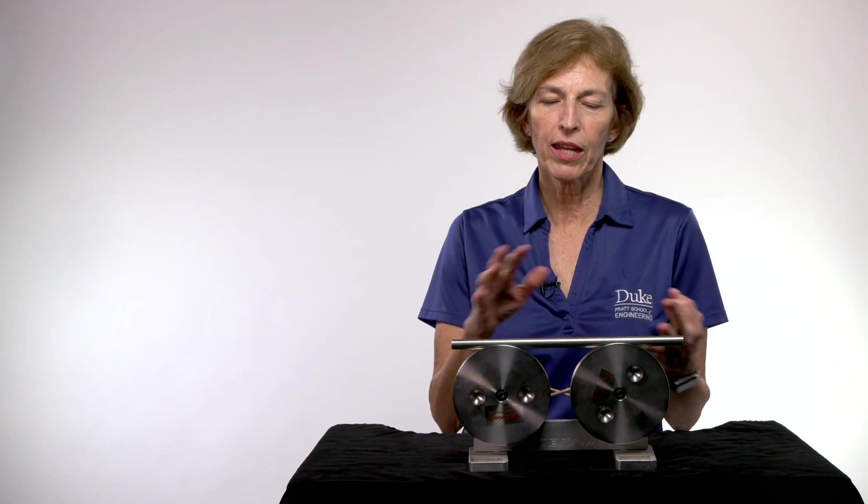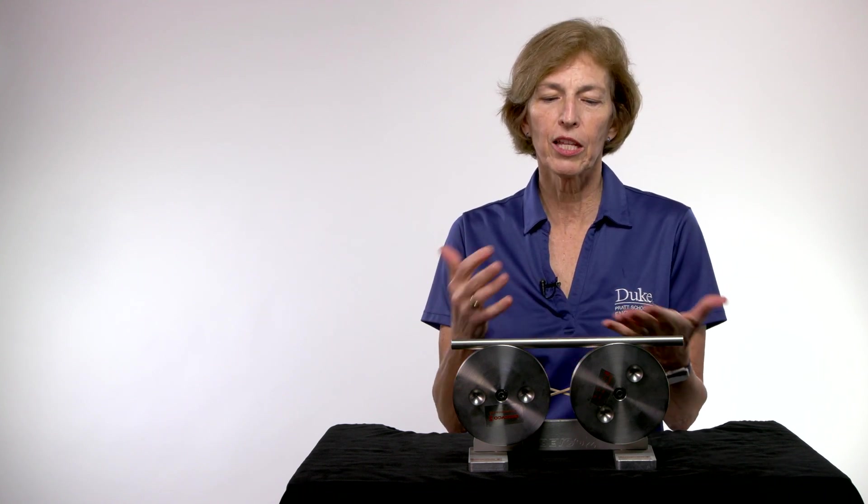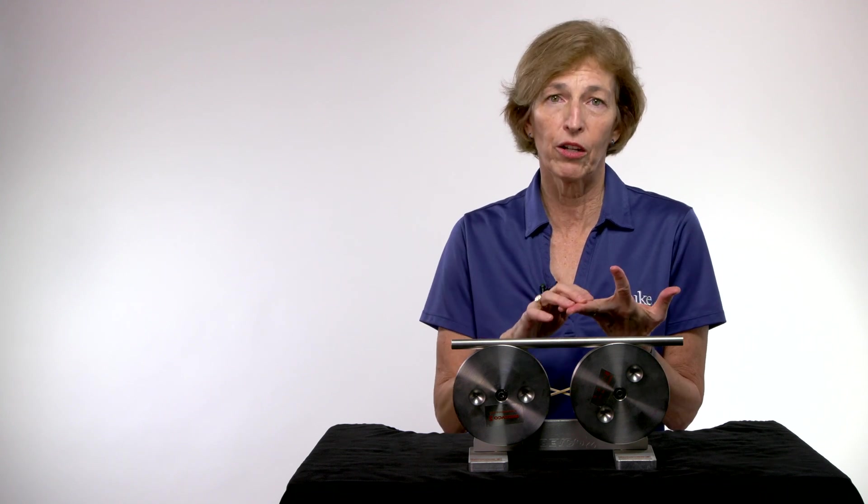So to recap the whole engineering process that we went through. First, we observed the system. And then we looked at what did we know? What did we not know? And what were we trying to understand? And we created variables. And then we applied our laws of physics. In this case, we applied Newton's second law, but we could apply conservation of mass momentum or energy.